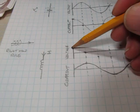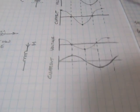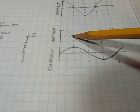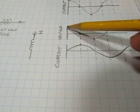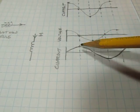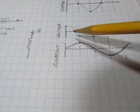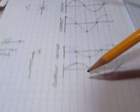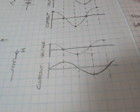Connecting those dots gives a sinusoid where we can see that the peak of the voltage occurs before the peak of the current. So the current is lagging the voltage in an inductor. To summarize: in capacitors the current leads the voltage, and in inductors the current lags the voltage.